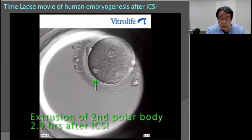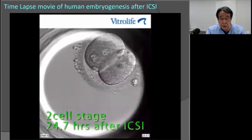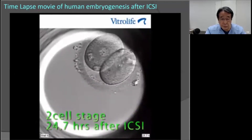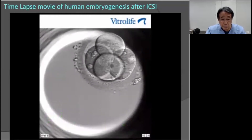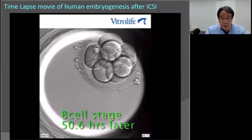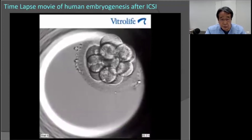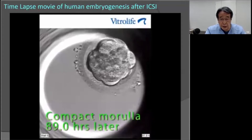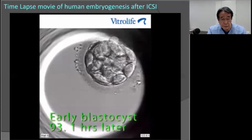This time-lapse movie shows human embryogenesis after ICSI: extrusion of the second polar body three hours after ICSI, disappearance of both pronuclei at 21 hours, two-cell stage at 25 hours, four-cell stage at about 40 hours, eight-cell stage at 50 hours, then 32 cells and a compact morula at 89 hours, proceeding to early blastocyst at 93 hours.